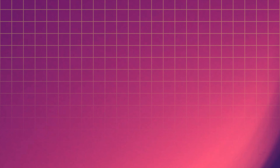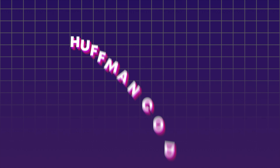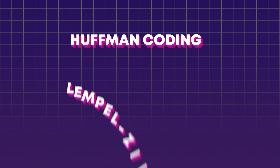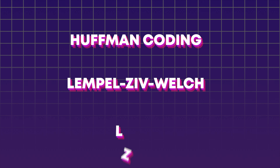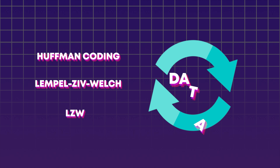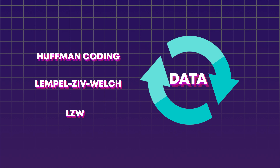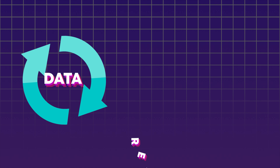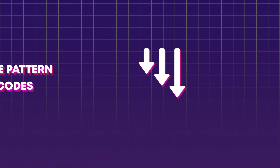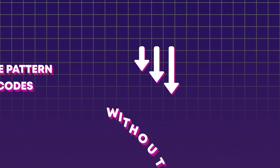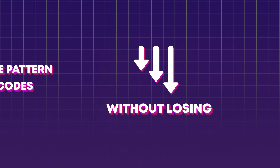So how do these compression formats actually work? Let's start with the lossless format. There are algorithms like Huffman Coding and Lempel-Ziv-Welch, or LZW, that find patterns and repetitions in the data. They replace these patterns with shorter codes, which reduces the overall file size without losing any information.